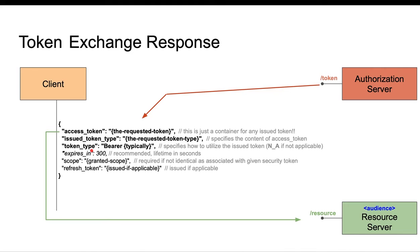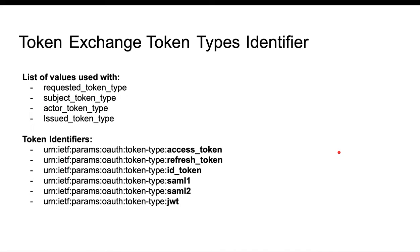The token type field indicates bearer token, which typically means the issued token can be used as-is and the client does not need to prove ownership when using it against a resource server. Then we have a list of granted scopes and a refresh token if applicable. The spec specifies token type identifiers — including requested token type, subject token type, actor token type, and issued token type.